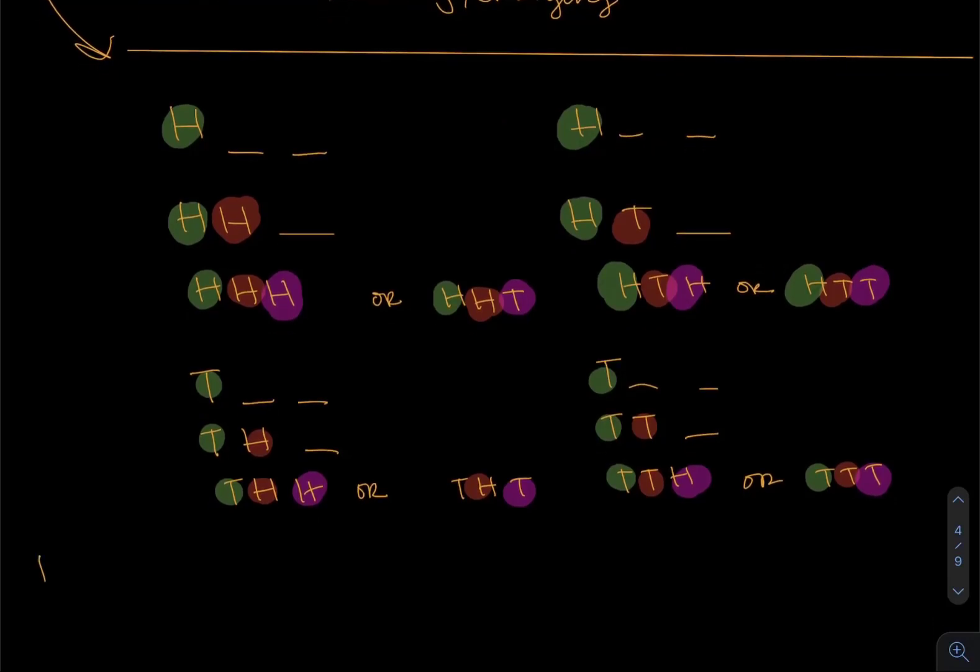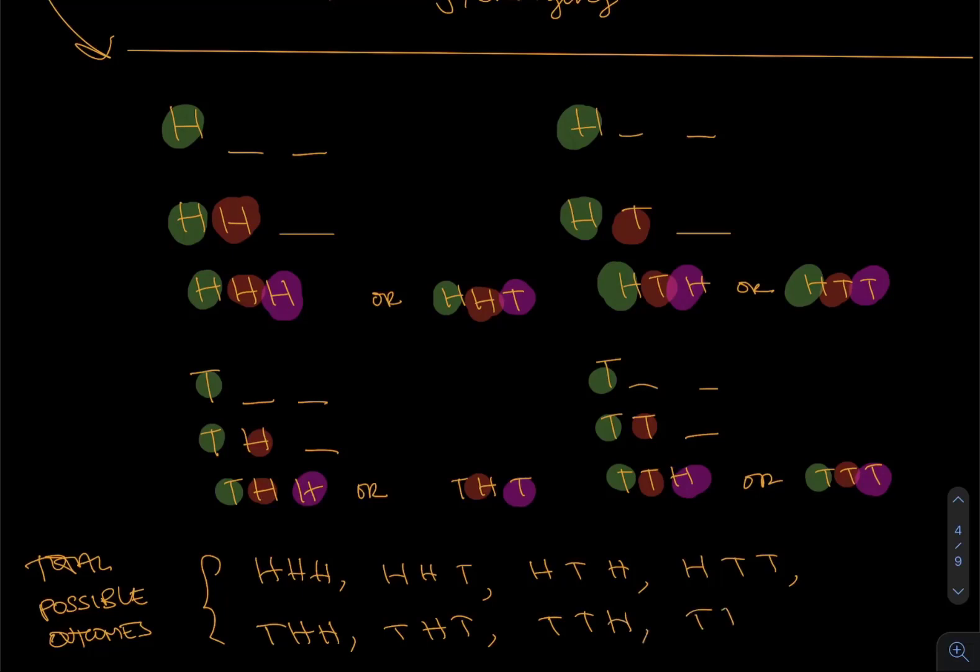So your entire possible outcomes, your total possible outcomes, just to clarify what we have here is: heads heads heads, heads heads tails, heads tails heads, heads tails tails, tails heads heads, tails heads tails, tails tails heads, and then all three tails.